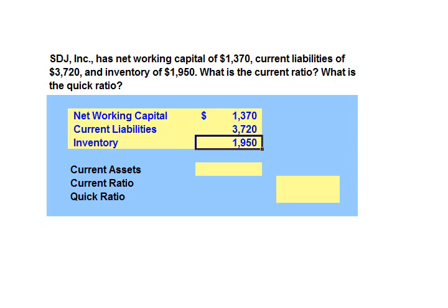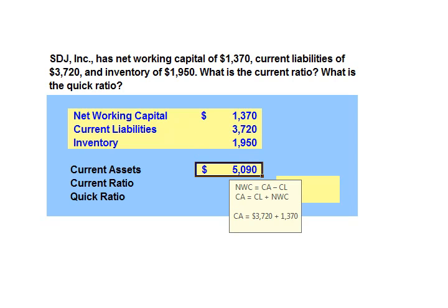As a first step, we need to calculate current assets. Net working capital equals current assets minus current liabilities. Thus, current assets will equal current liabilities plus net working capital, or $5,090.